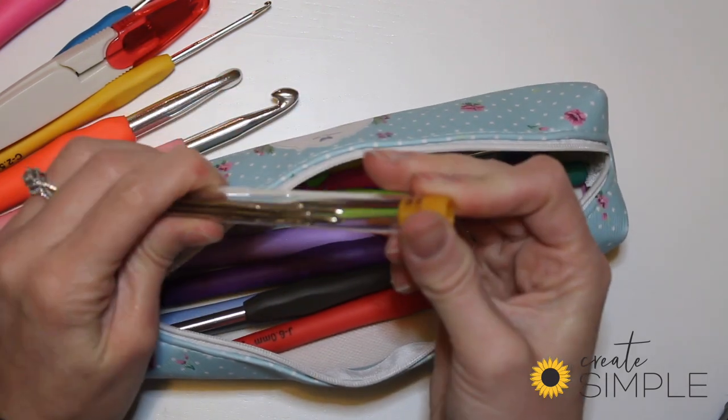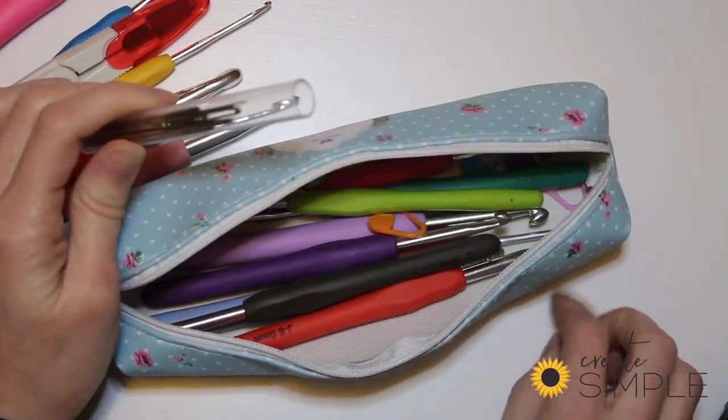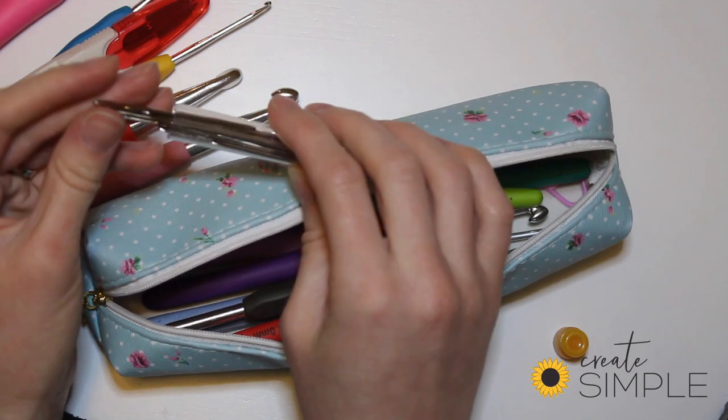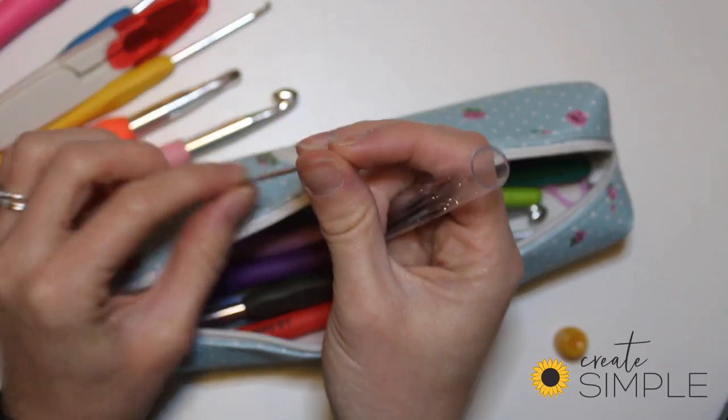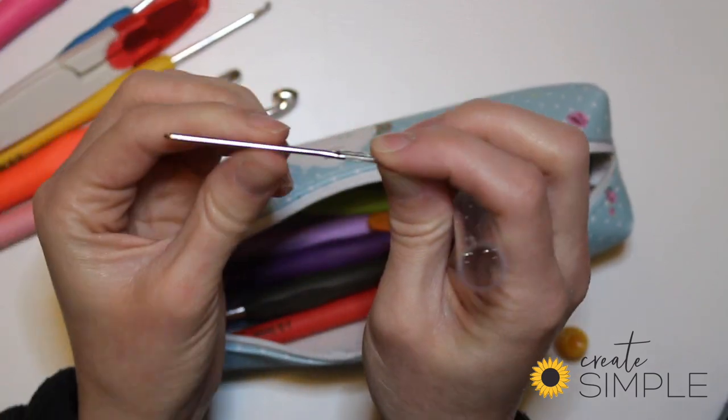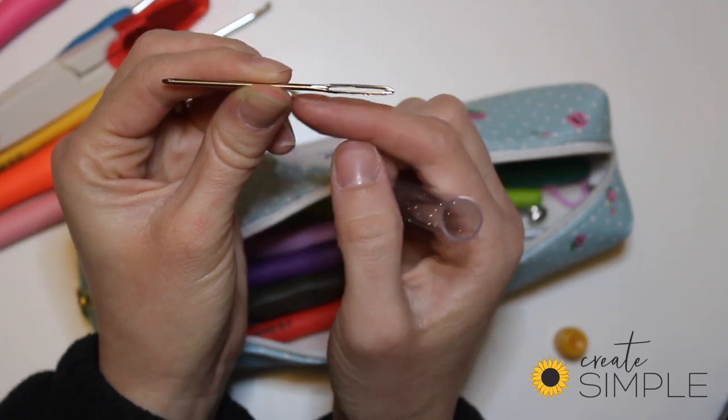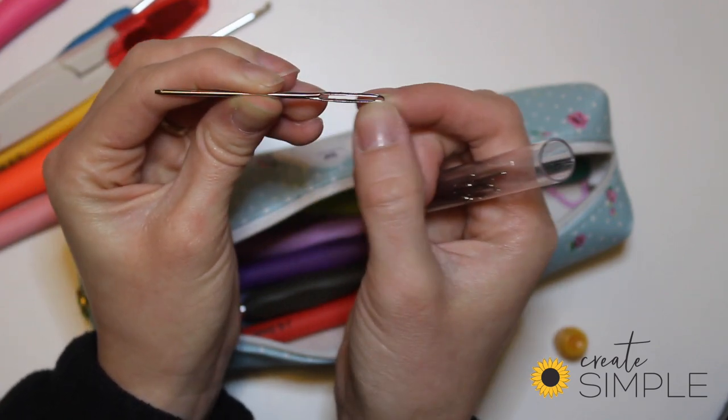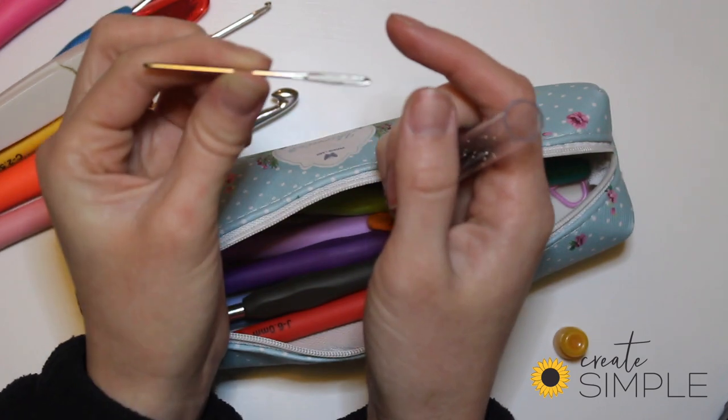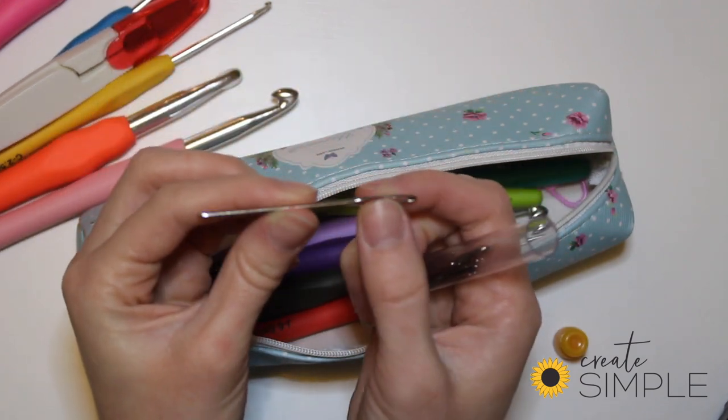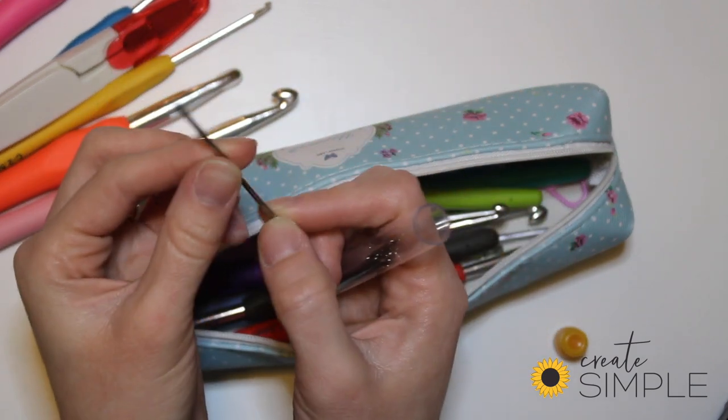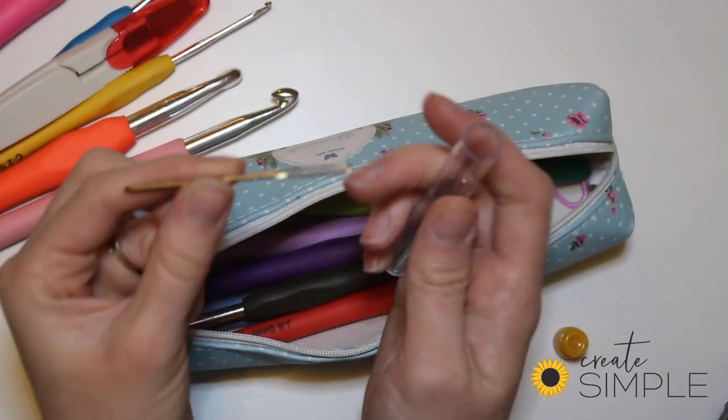You also have these needles. They're not sharp, they're just really thick. You can see that needle has a really big eye in it so that you can fit yarn through there. This comes in handy at the end of your project or anytime where you need to hide the ends of your yarn, which you'll learn in a future video.